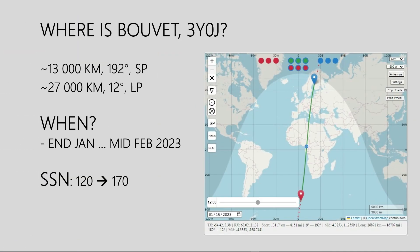In this picture you can see that Bouvet is over 13,000 kilometers away from Finland in the direction of 192 degrees via short path. The expedition will start in a week or so and will be on the air for three weeks. When you create the predictions, you can use the sunspot number of 120 or even higher.